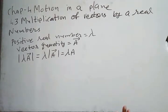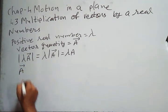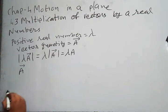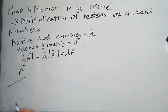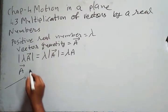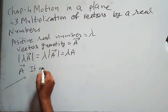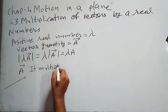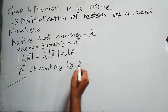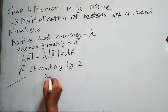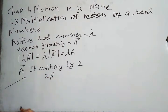Now suppose we have a vector A here. If I multiply by 2, then what happens? It will become 2 vector A.